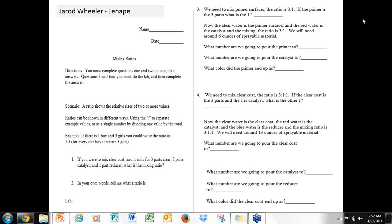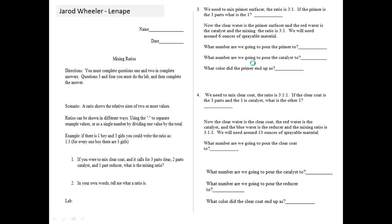The scenario I liked: a ratio shows the relative size of two or more values. He's relating it to math and explains the different ways ratios look, giving an example — one boy to three girls. Then he gets into mixing the primer and different parts of the paint coats for auto body. I really like the way he asks questions — if the primer is three parts, what's the one part? What number do we pour the primer to? What number for the catalyst? He actually leads the questions, which helps students see where things are coming from.